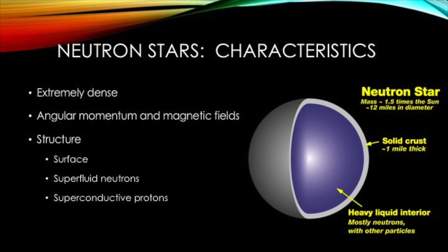Neutron stars are even more dense than white dwarfs, around 200 million times denser to be exact. One teaspoon-sized piece of matter from a neutron star would weigh 1 billion tons on Earth. Due to the intense amount of matter being compacted into a small place, magnetic fields and angular momentum are also very strong.